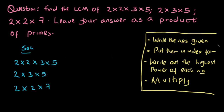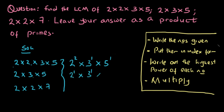The next step is to put them in index form. For the first number: how many 2's do I have? Two, so 2 raised to power 2. How many 3's? One, so 3 raised to power 1. How many 5's? One. For the second: 2 raised to power 1, 3 raised to power 1, 5 raised to power 1. For the third: 2 raised to power 2 times 7 raised to power 1.